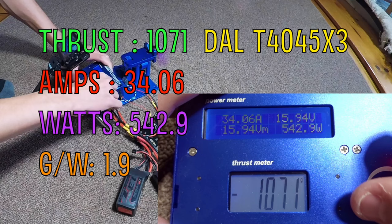On the DAL T4045 Bullnose tri-blade four-inch prop, results go along with the five-inch. We got 1071 grams of thrust, a very good number for four-inch. However, 34.06 amps—high amps once again. This motor is labeled 2480 KV but feels like 2700 KV because the amps are insane. 542 watts with even lower efficiency of 1.9 grams per watt.